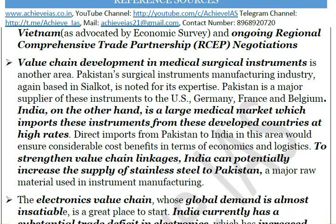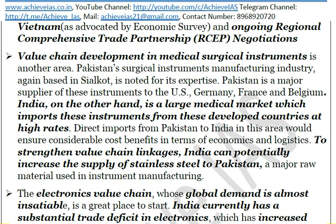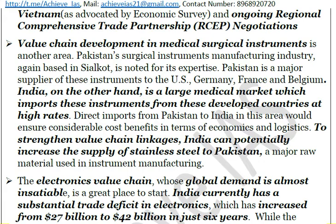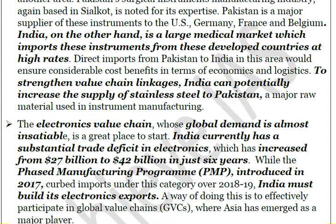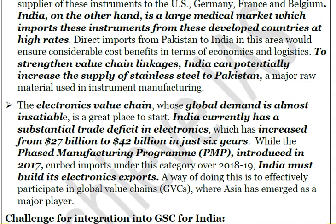There must also be focus on the electronics value chain, as electronics are in great demand globally but India's role is limited. Tariffs on raw materials used for manufacturing electronic products should be reduced so that finished electronic goods can be exported. Currently the trade deficit in electronics has increased from 27 billion dollars to 42 billion dollars in just six years. Though the Phased Manufacturing Program was introduced by the government in 2017 to curb such imports, India must also build its electronics exports by effectively participating in global value chains where Asia has emerged as a major player.